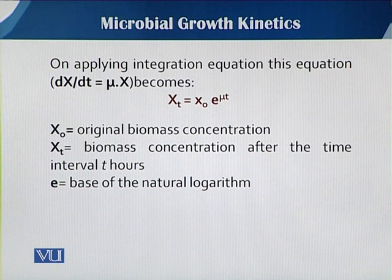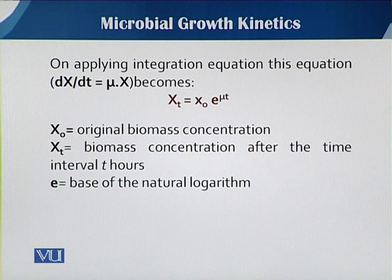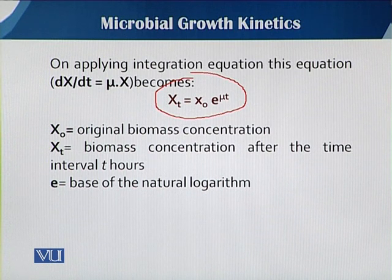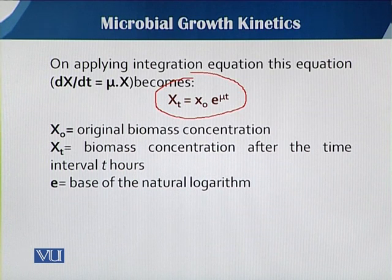When the equation dx/dt = μ · x is integrated, it can be transformed into: X_t = X₀ · e^(μt), where X₀ is the original biomass concentration added at the time of inoculation, X_t is the biomass concentration after time t, and e is the base of the natural logarithm.